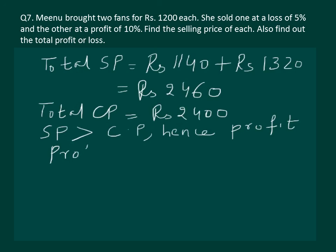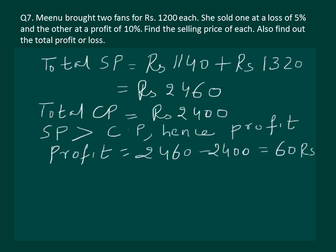Let's calculate the profit in rupees. Profit equals sale price minus cost price, which comes out to be rupees 60. Since we are not asked for profit percent, we conclude here: Minoo made a profit of rupees 60 on the whole transaction.